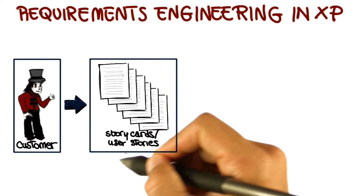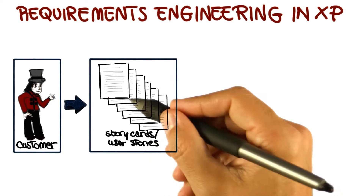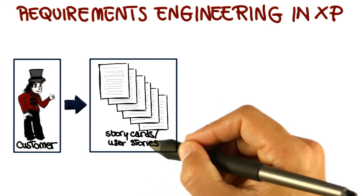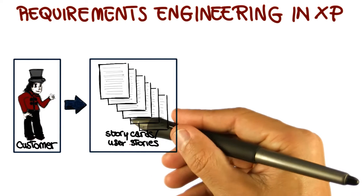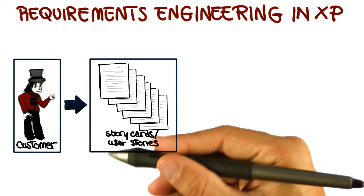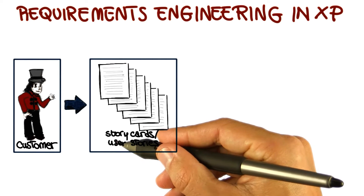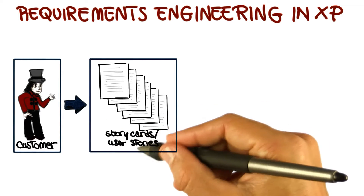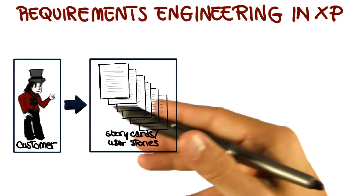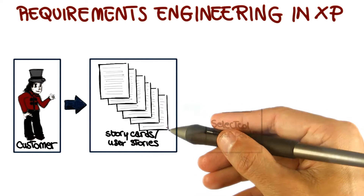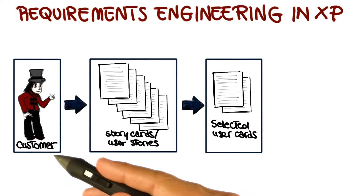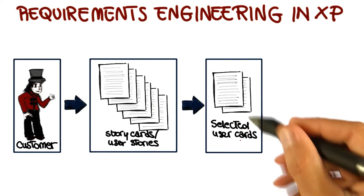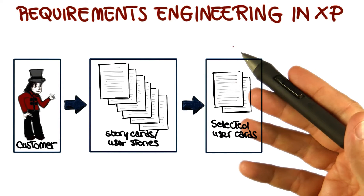These are written by customers on cards. What the development team does is take these user stories and break them down into implementation tasks. Those implementation tasks are then used as a basis for schedule and cost estimates. Given these estimates, and based on their priorities, the customer will choose the stories that will be included in the next release, in the next iteration.